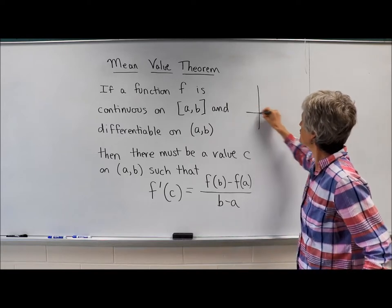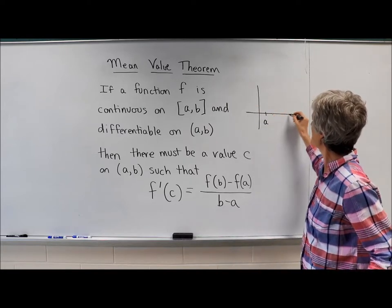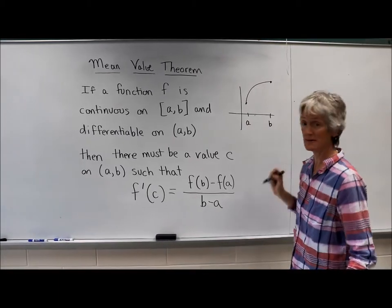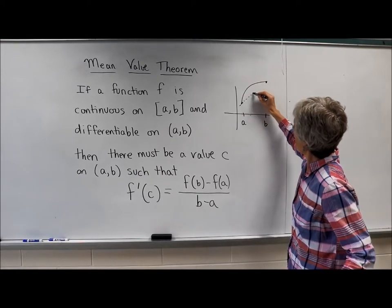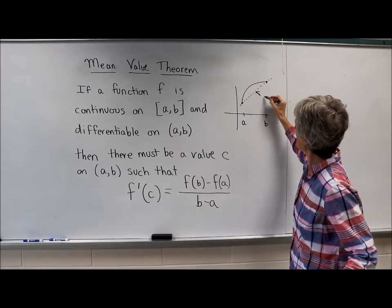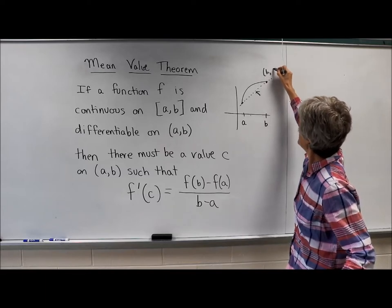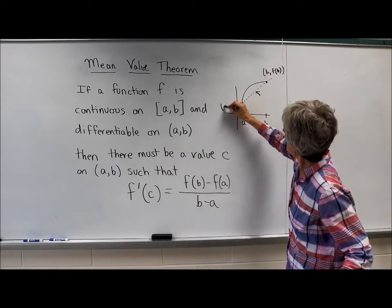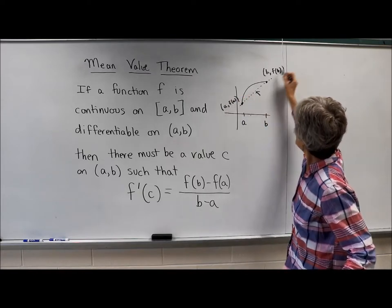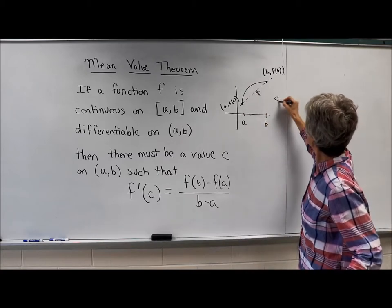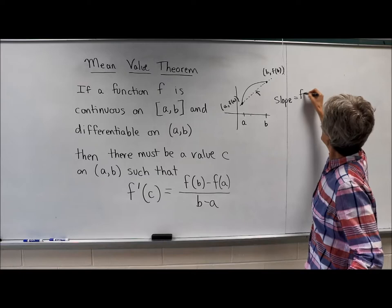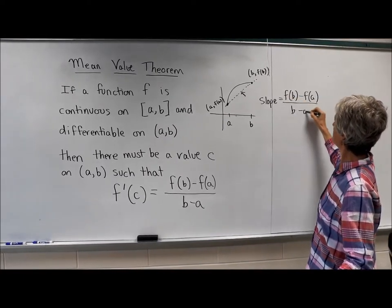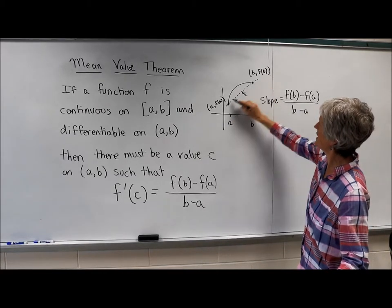Let's draw a picture. I think a picture says it all. If I have a and I have b, and who knows what this function does, I could find the average rate of change or the slope of that secant line. This would be the point (b, f(b)), this would be the point (a, f(a)). So the slope of that line would just be the change in the y's over the change in the x's. That's just the slope, the average rate of change.